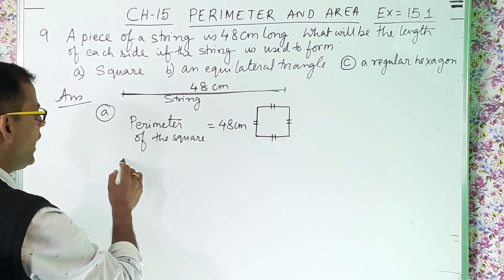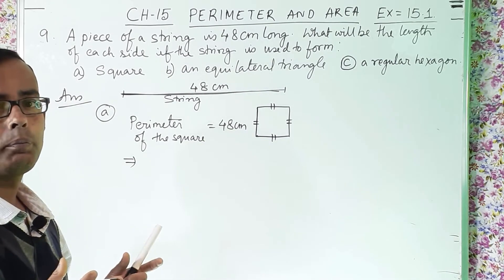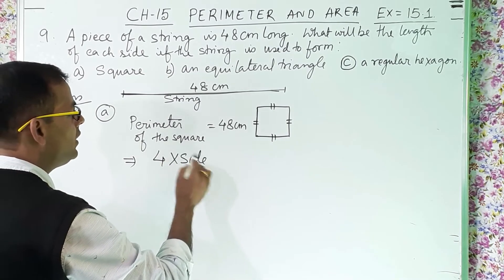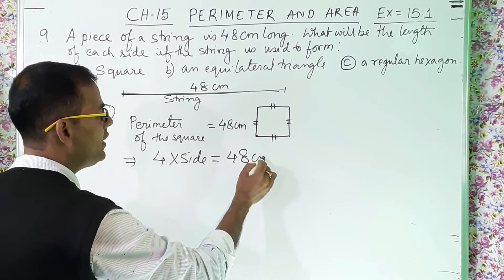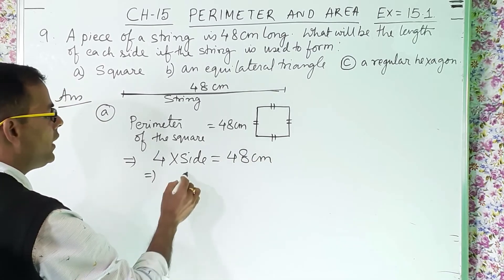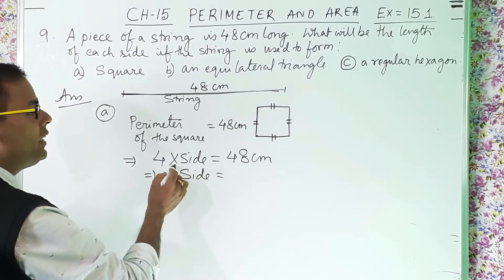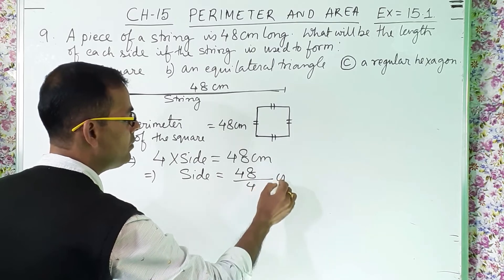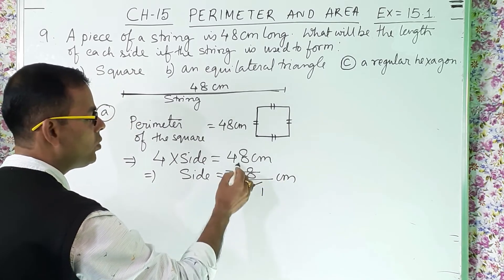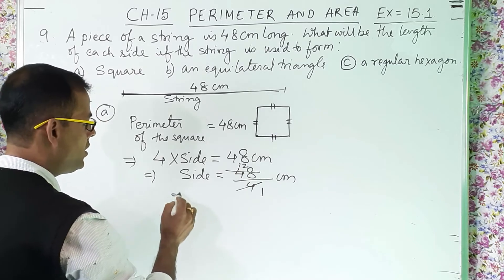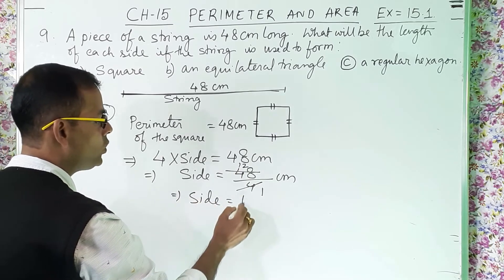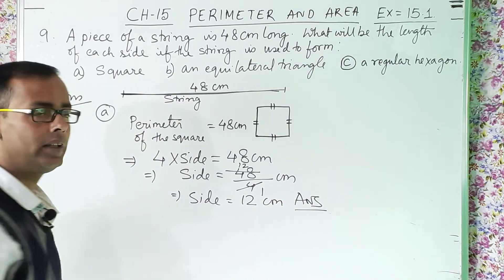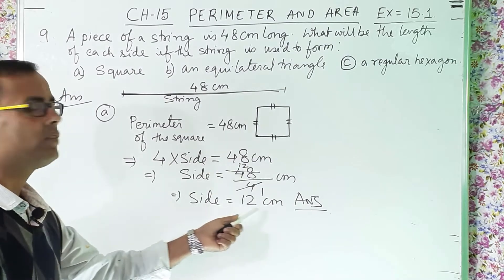The formula for the perimeter of a square is 4 into side. So 4 into side equals 48 centimeter. From here I can get the side because 4 goes to the other side and it becomes divided by 4. So side equals 48 divided by 4, which equals 12 centimeter. Each side of the square is 12 centimeter.